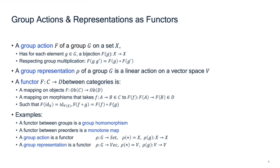A functor is faithful when the map on morphisms — from the set of maps from A to B to the set of maps from F(A) to F(B) — is an injective function. This is equivalent to saying that a group representation is faithful because an injective group representation is a faithful one.